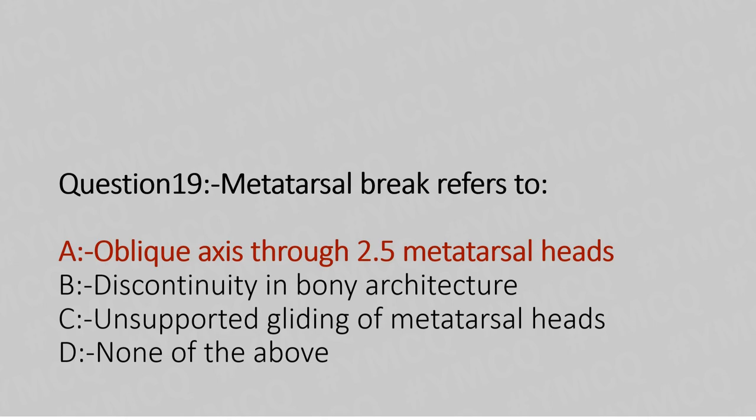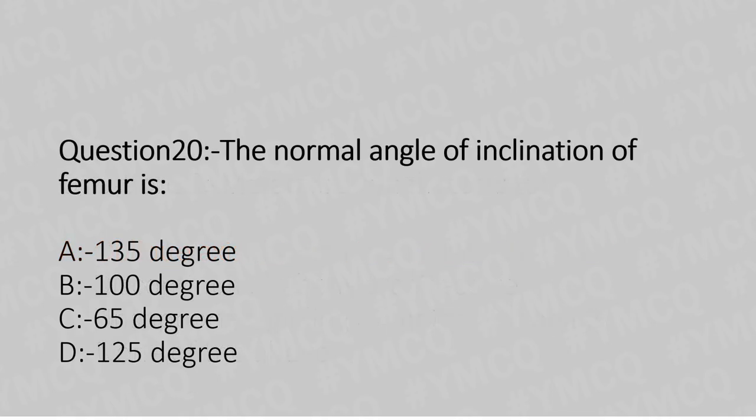Now let's move to question number 20. The normal angle of inclination of the femur is — option A: 135 degrees, option B: 100 degrees, option C: 65 degrees, option D: 125 degrees. The answer is option D, 125 degrees.